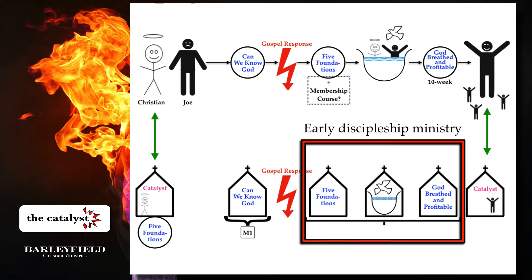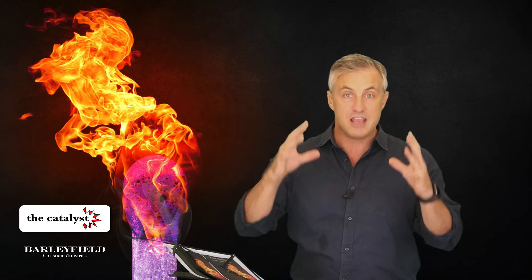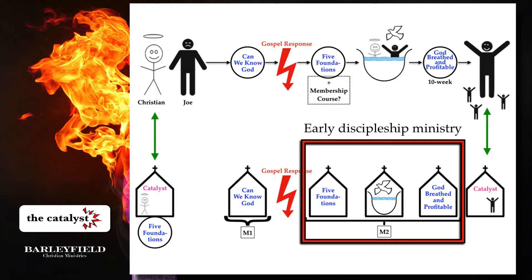Thirdly, this church is supporting evangelism and early discipleship by making sure this block of ministry — which I'm marking as M2, ministry position number two — is constantly running in the church. You've got a group of dedicated early discipleship leaders ensuring that this sequence of events is constantly repeating in the life of the church, so that whenever someone responds to the gospel in one of your meetings, you will definitely be having a Five Foundations course beginning soon. Five Foundations then leads into the baptisms, which then leads into their joining a small group for the God-Breathed and Profitable course.